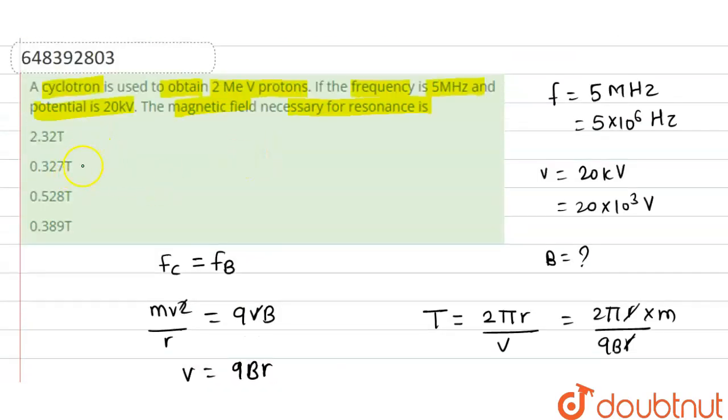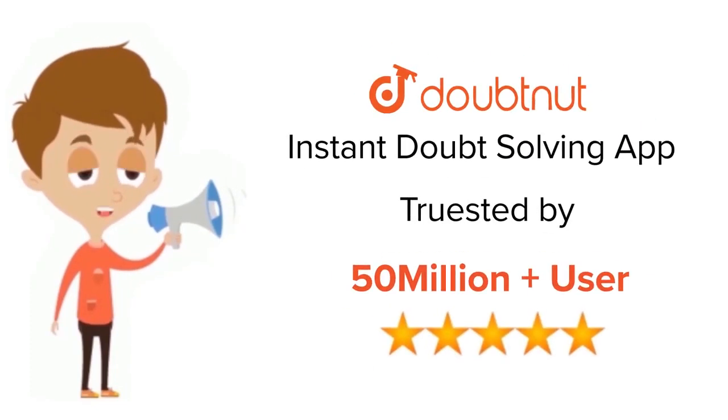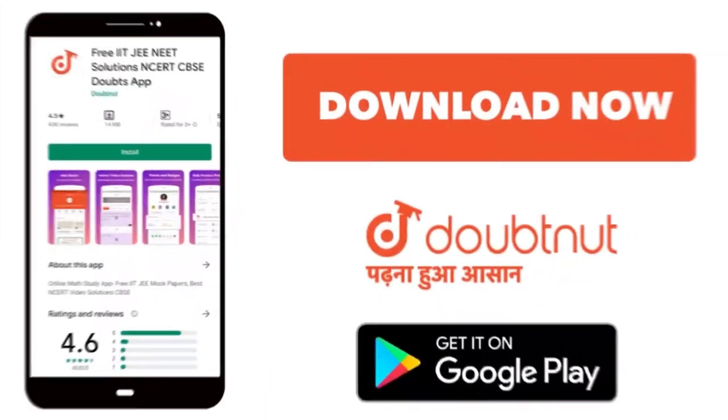So from the options, the correct option will be option B. Thank you. For class 6 to 12, IIT-JEE and NEET level, trusted by more than 5 crore students, download Doubtnet app today.